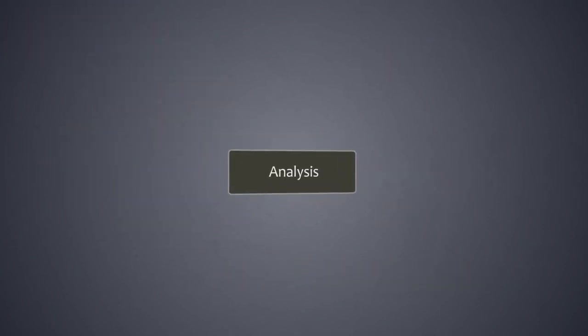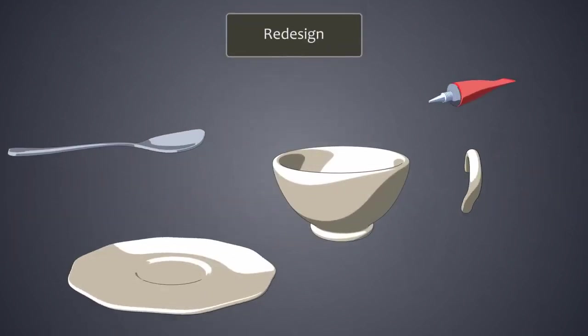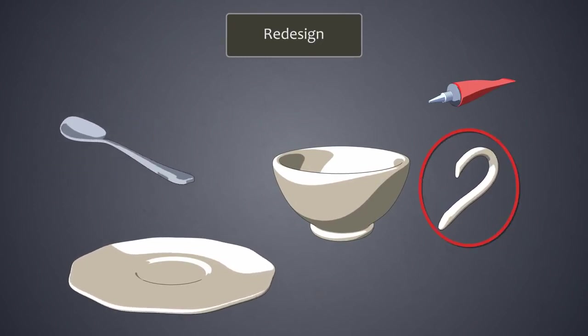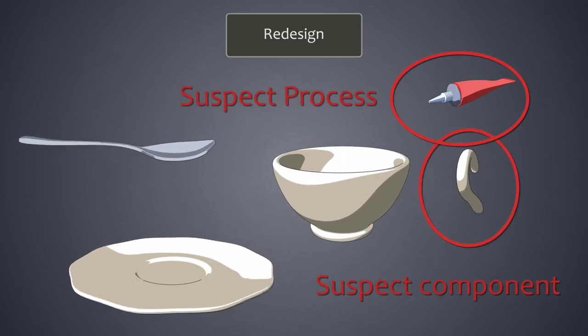If during the analysis phase components or processes are marked as suspect, then a redesign can be considered. In our example, we marked the ear as a suspect component and the gluing of the ear to the cup as a suspect process.